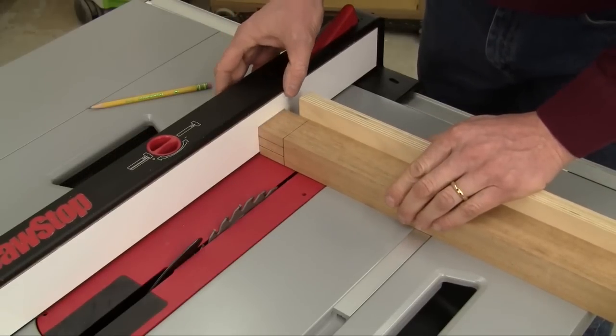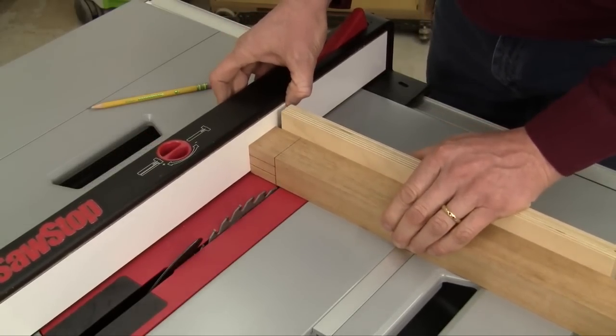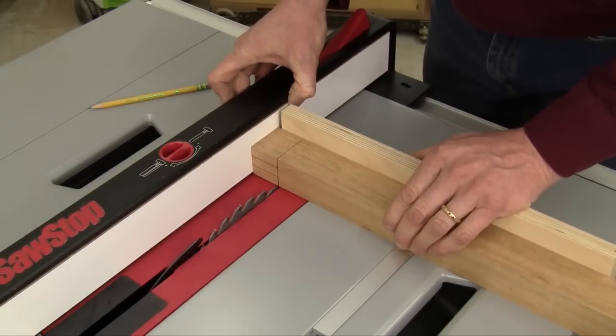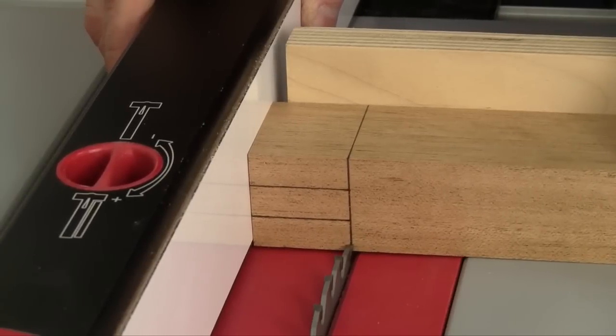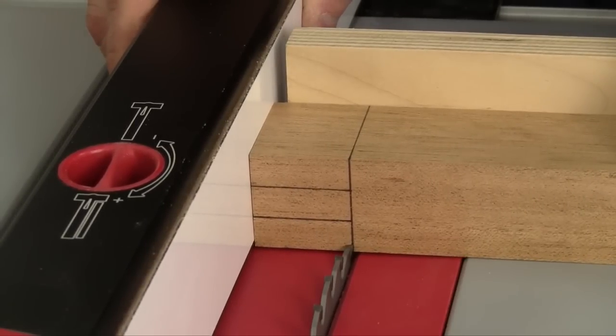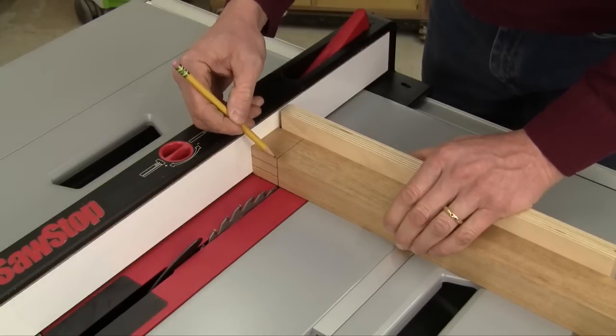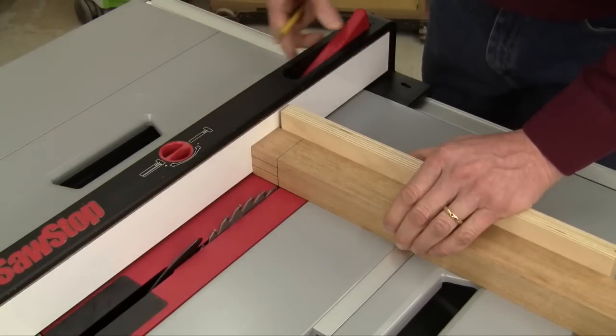Now slide your work piece over against your rip fence and move the rip fence and work piece together until the outside of the blade just lines up with your shoulder lines. I've marked my shoulder lines right here. Lock the fence.